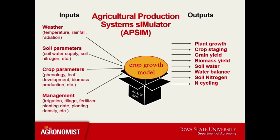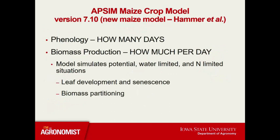Some of the outputs that we can get from a crop growth model include crop staging, grain yield, biomass yield, soil water, nitrogen cycling, among many others. Specifically, I'm using the APSIM maize model version 7.10, which was released in 2018.